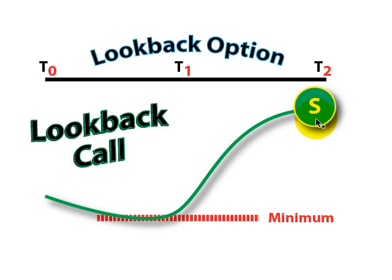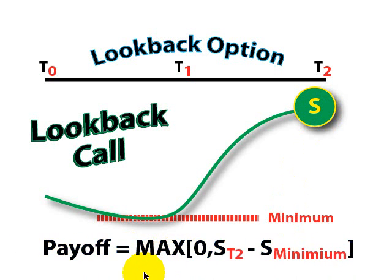So at exercise, the holder of the lookback call profits from the stock price minus the minimum value of the stock during the holding period. Specifically, the payoff is the maximum of zero or the stock at exercise minus the stock at its minimum value, whatever that was, which we won't know at the beginning.